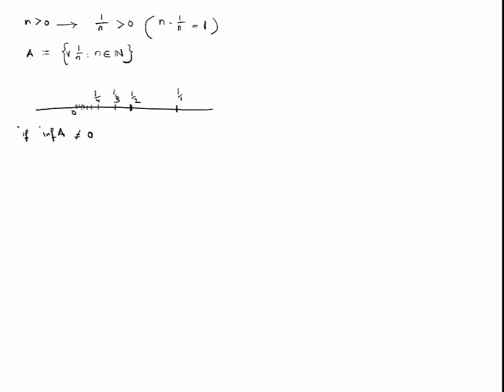We already know from the way we've defined n such that n is always greater than 0 that necessarily 1 over n is also greater than 0.